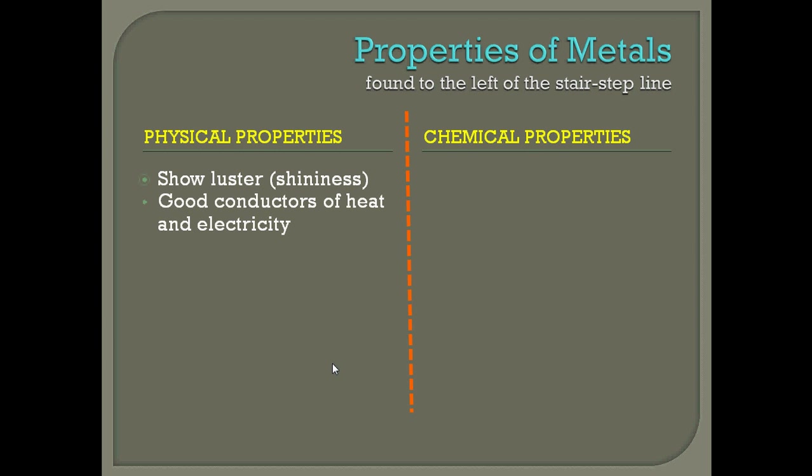Metals are also going to be good conductors of both heat and electricity. If you think back to when we talked about physical properties, we said that metals were good conductors. For example, if you held a metal spoon into a flame, over time that heat is going to creep up the spoon and touch your fingers. The same thing happens with electricity — a piece of metal will allow electricity to easily flow through it.